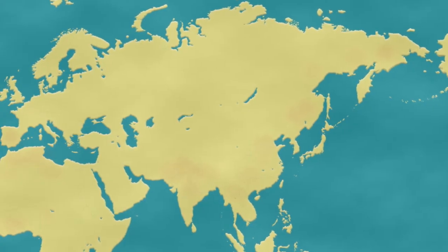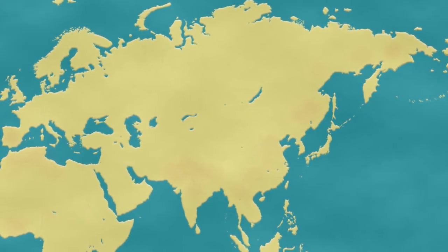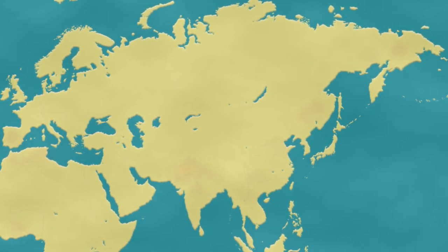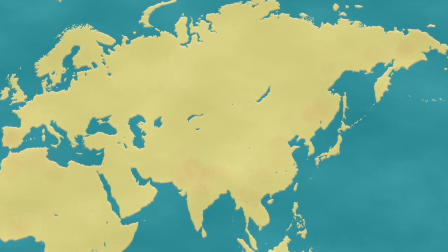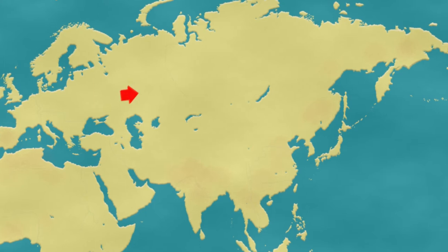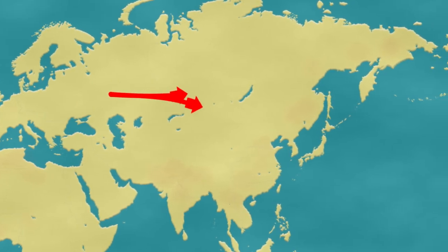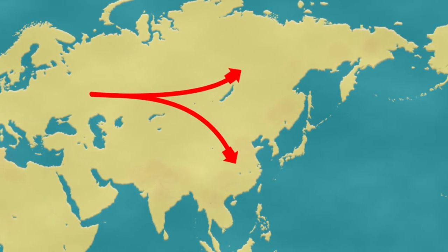How the Americas eventually became populated with human beings has been a subject of fierce debate, and is a subject of history which is continually being revised based upon new discoveries and research. Here is what we can tentatively say so far. Based upon DNA research, every single native person of North and South America traces their genetic lineage to an East Asian people, which split from the rest of the Asian population sometime around 25 to 30 thousand years ago.